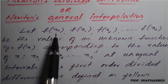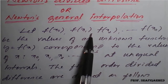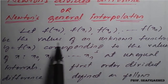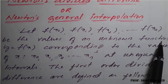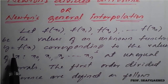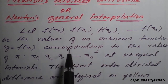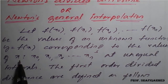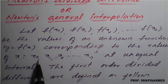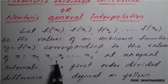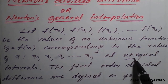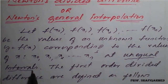Let f(x0), f(x1), f(x2), so on f(xn) be the values of an unknown function y = f(x), corresponding to the values of x: x0, x1, x2, so on xn, at unequal intervals. This is very important — it applies specifically for unequal intervals.